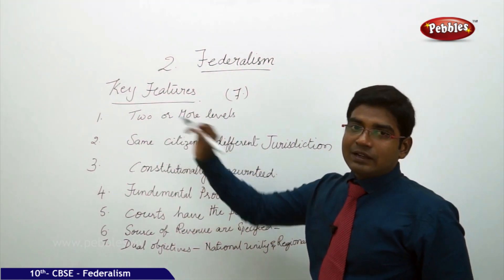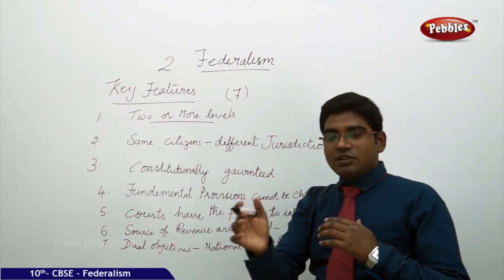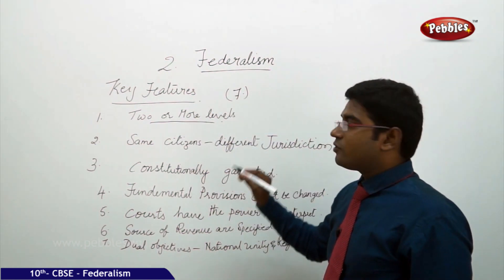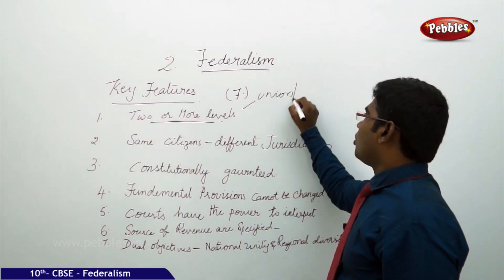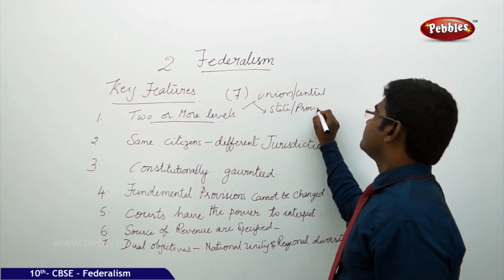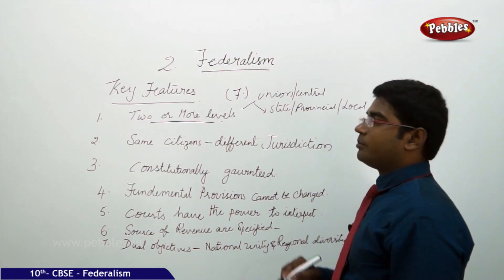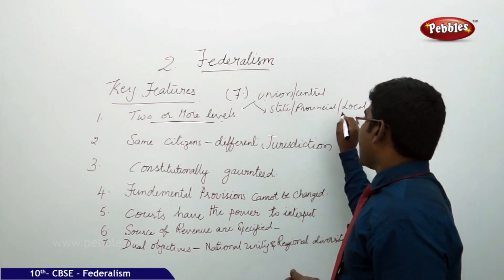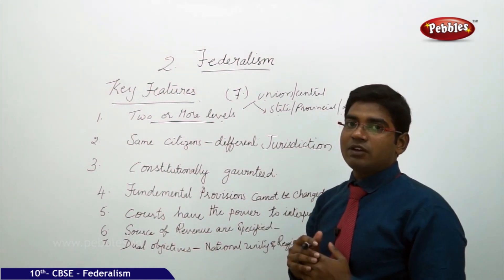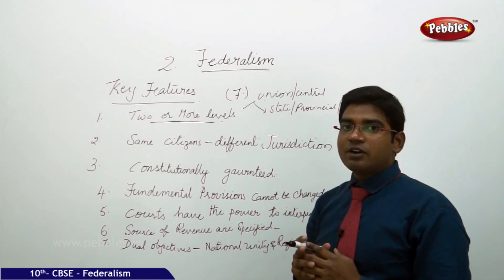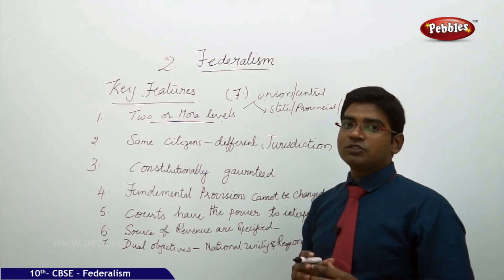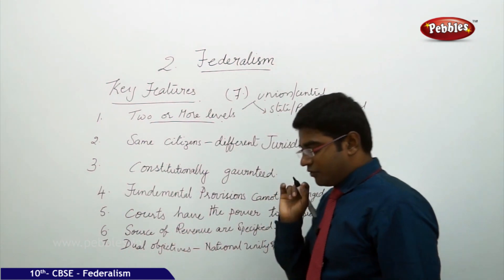First, there should be at least two or more than two levels of government. The government has to share its powers with the other respective government. The sharing of power will be done between the union or central and state, provincial, or local governments. This structure can be a two-level or three-level government. As in India, we now have a three-tier level of governments: the union government, the respective state governments, and the Panchayat or local and municipal governments.